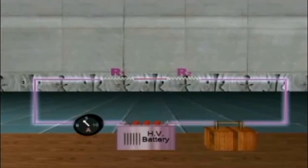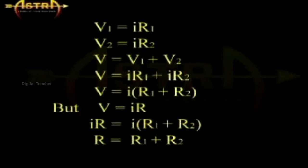Applying Ohm's law to the two resistors we have V1 equals IR1, V2 equals IR2.